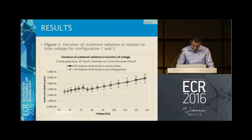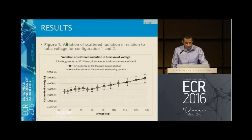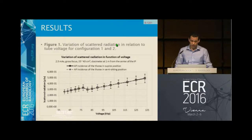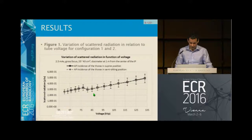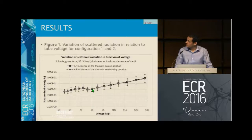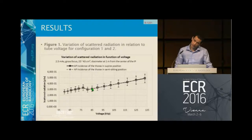This is figure one: the variation of scattered radiation in relation to tube voltage. We can see here a slight increase, then a decrease at a certain voltage, and it continues to rise again. This slight variance has to do with the Compton effect and the photoelectric effect.